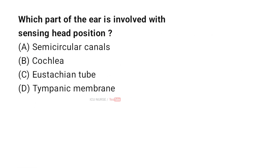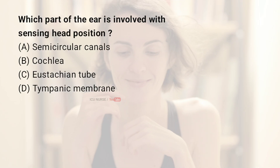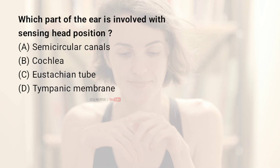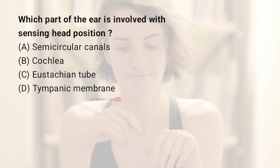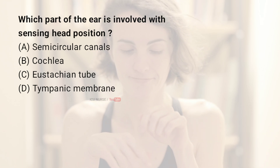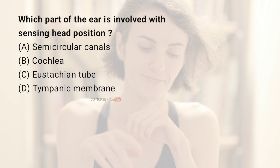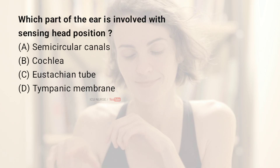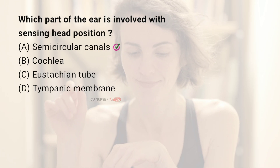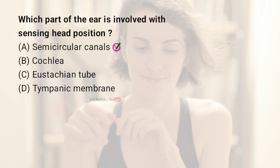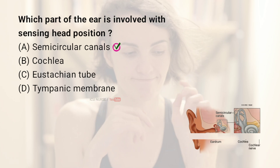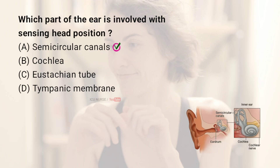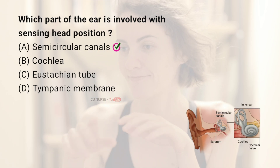Which part of the ear is involved with sensing head position? A. Semicircular canals, B. Cochlea, C. Eustachian tube, D. Tympanic membrane. And the correct answer is A. Semicircular canals. The semicircular canals in the inner ear help sense the position and movement of the head.